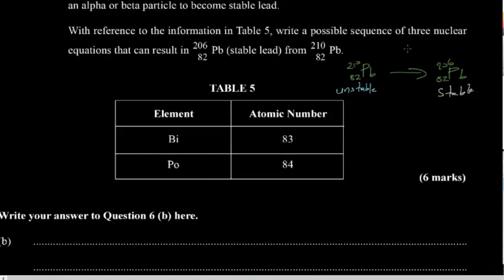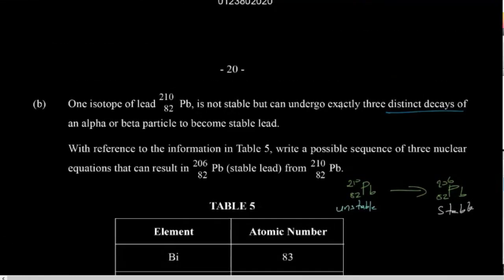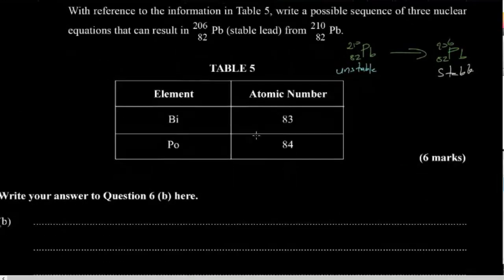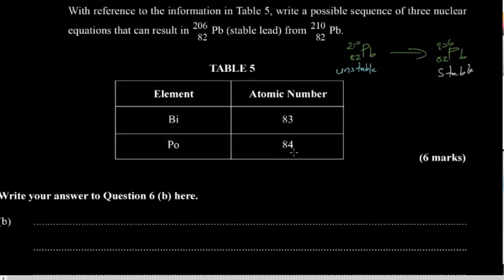The examiner says it can undergo a sequence of three distinct decays of an alpha or beta particle. We're given bismuth, which has an atomic number of 83, and polonium, which has an atomic number of 84.